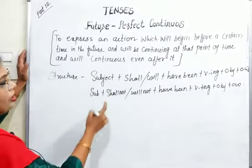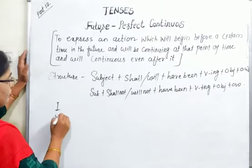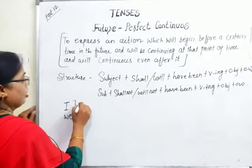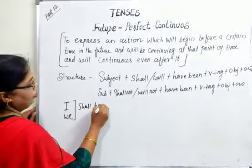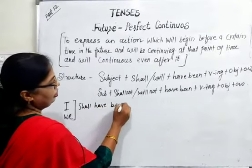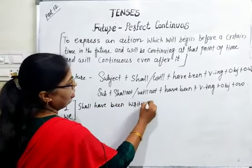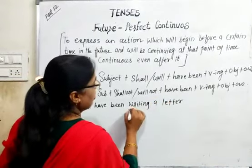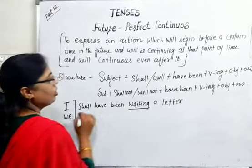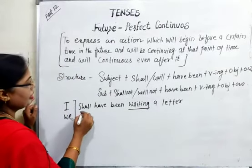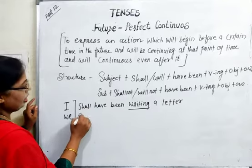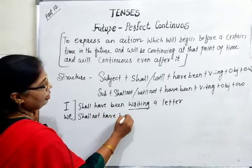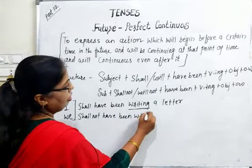Subject के आगे shall use करें — I और We के आगे shall have been writing a letter. जो हमने first tense से last tense तक writing a letter यही एक sentence को changes बताया है। Negative करना है तो: shall not have been writing a letter।